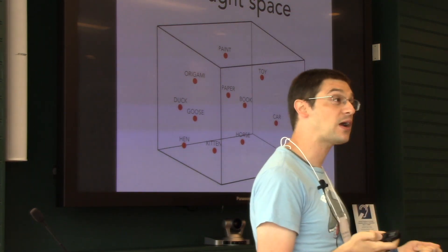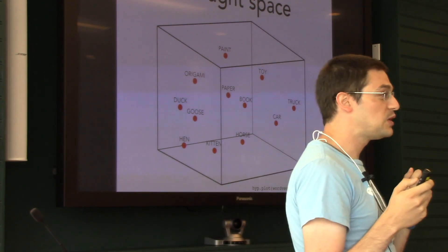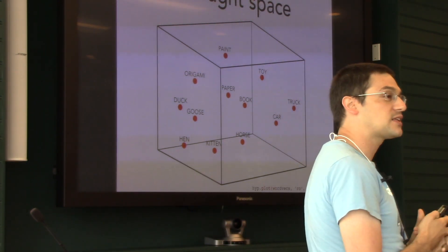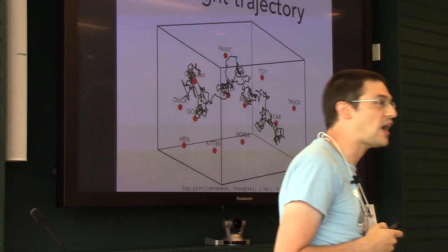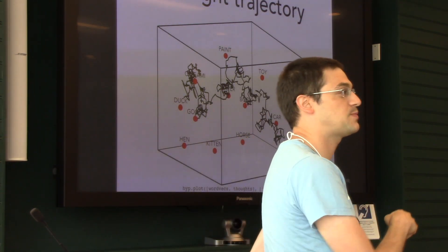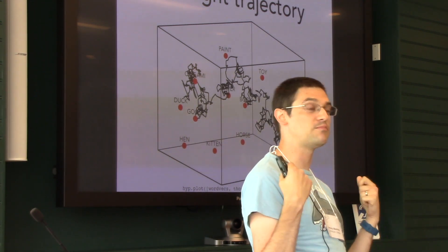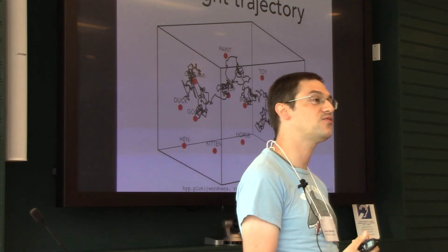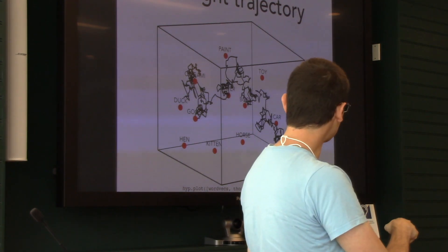Over the course of an experiment, you might undergo a sequence of thoughts, so you can think of thought trajectories. How your thoughts change over the course of an experiment—as you're having a conversation, memorizing a list of words, or watching a movie—is a trajectory.